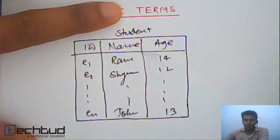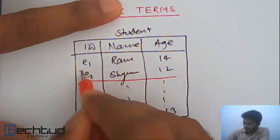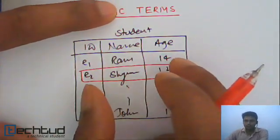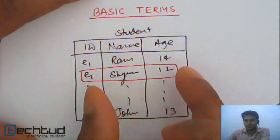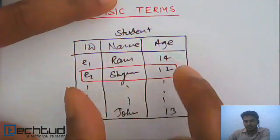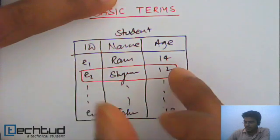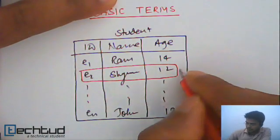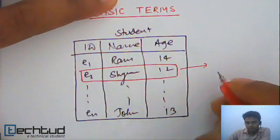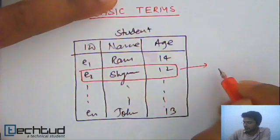If you consider each record in this database table, this is some information about a person, a student, Shyam. The Shyam has its own existence or identity in the universe of this course. So something like this, or the object which has its own existence, independent existence in the real world, is called entity.